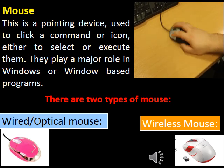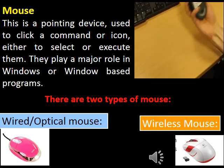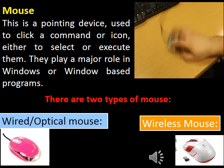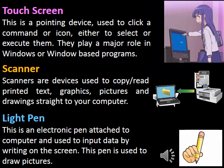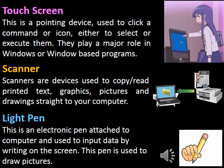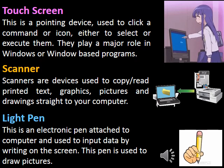First, wired optical mouse; second, wireless mouse. The third input device is the touchscreen. This is a pointing device used to click a command or icon either to select or execute them.